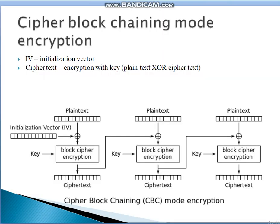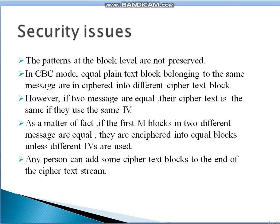In the CBC algorithm, we use an initialization vector — it is the main factor of this algorithm. The ciphertext is equal to the encryption with key of the plain text XOR-ed with the previous ciphertext. First we have a plain text message, then XOR with the initialization vector, then apply block cipher encryption with the key. This ciphertext then goes to the next plain text block, is XOR-ed, and encrypted again, continuing for each subsequent block.